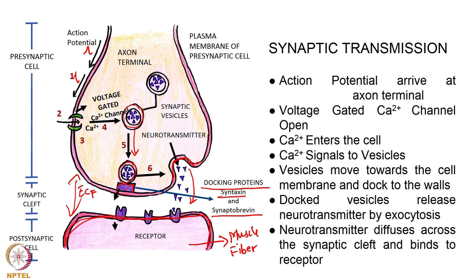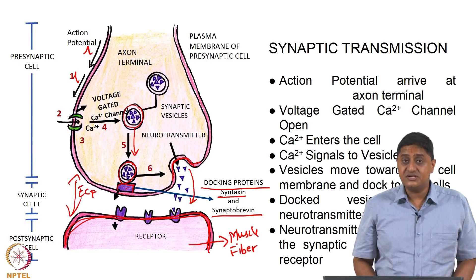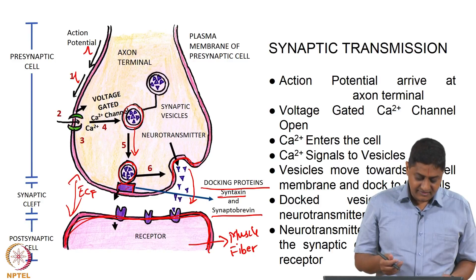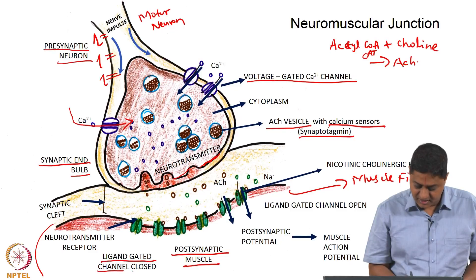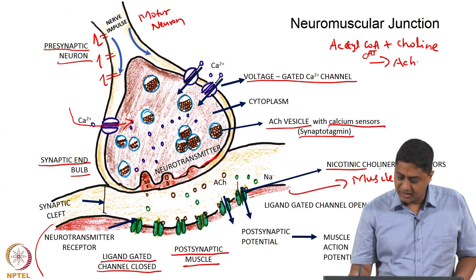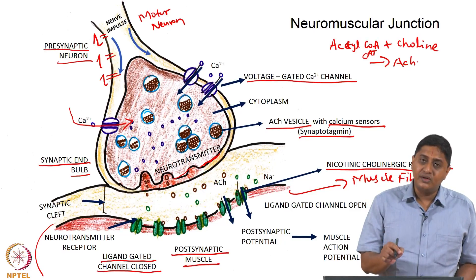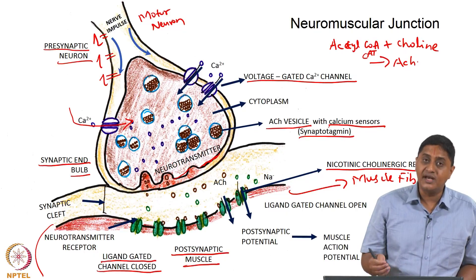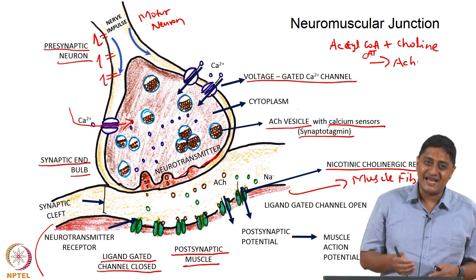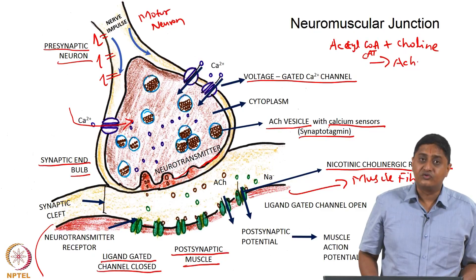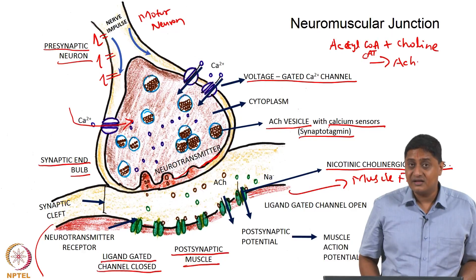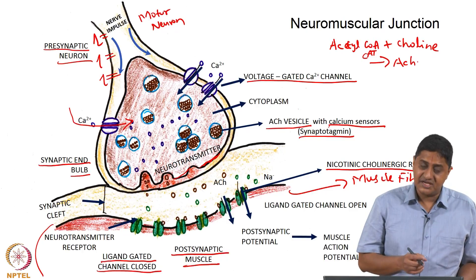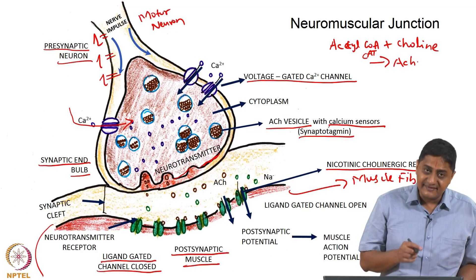On the postsynaptic side, there are receptors — like locks waiting to be opened. These are ligand-gated ion channels, also called nicotinic cholinergic receptors. These are like locks, and acetylcholine is the key that opens this lock. Whenever acetylcholine attaches to the nicotinic cholinergic receptors, these channels open and let in sodium inside. These are different from regular voltage-gated sodium channels — these are ligand-gated sodium channels which open only when acetylcholine attaches to them.